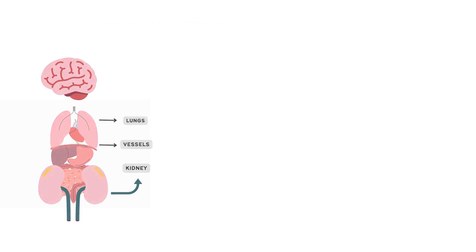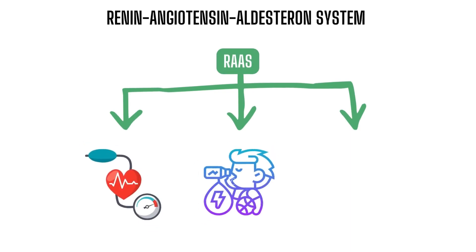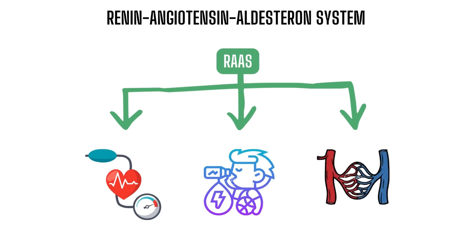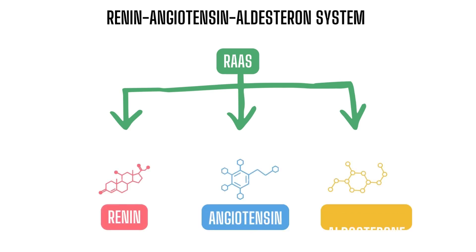Similarly, the renin-angiotensin system, or renin-angiotensin-aldosterone system, or RAS, is a hormone system that regulates blood pressure, fluid, and electrolyte balance along with systemic vascular resistance. As the name suggests, the renin-angiotensin-aldosterone system is comprised of these three hormones: renin, angiotensin, and aldosterone.